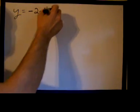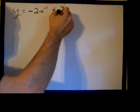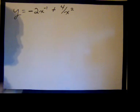We're going to take a first derivative, and it is going to be y equals negative 2x to the negative first plus 4 over x squared.